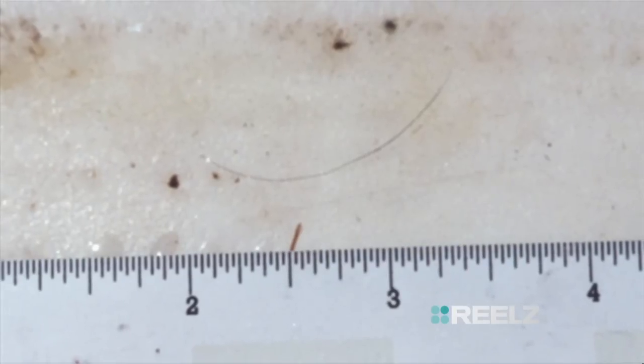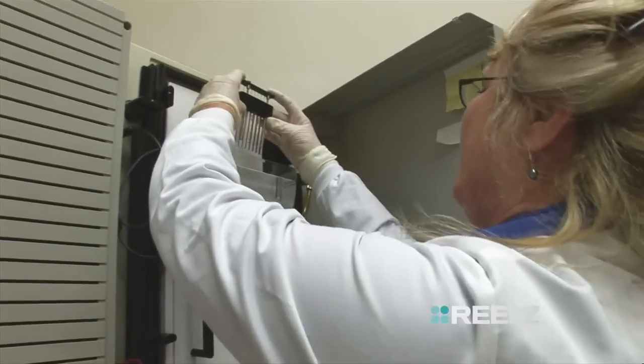The hairs were about an inch and a half long, so we actually only used about half an inch of the shaft of the hair and did our mitochondrial DNA testing on that.